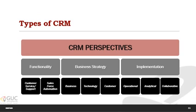Several criteria can be used to categorize CRM systems. From a functionality perspective, there are two types: customer service or support, and Salesforce automation. From a business strategy perspective, CRM systems can be categorized by three complementary perspectives: business, technology, and customers. From an implementation perspective, CRM systems can be operational, analytical, and collaborative.